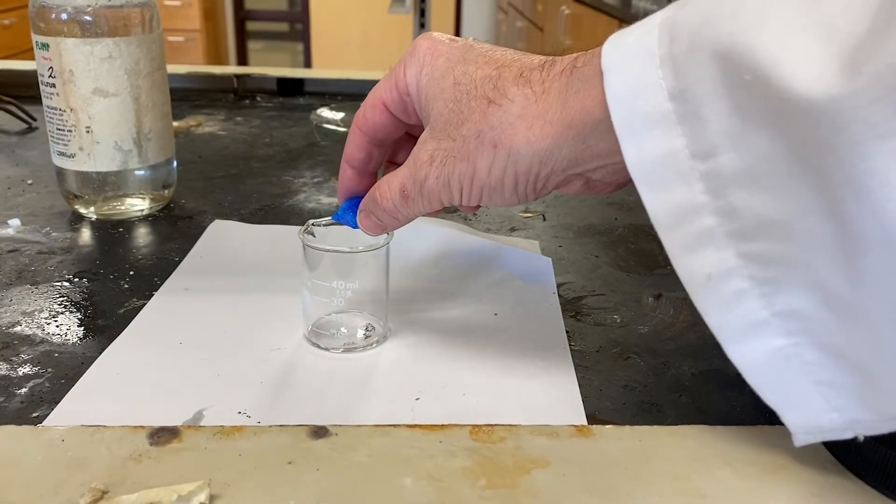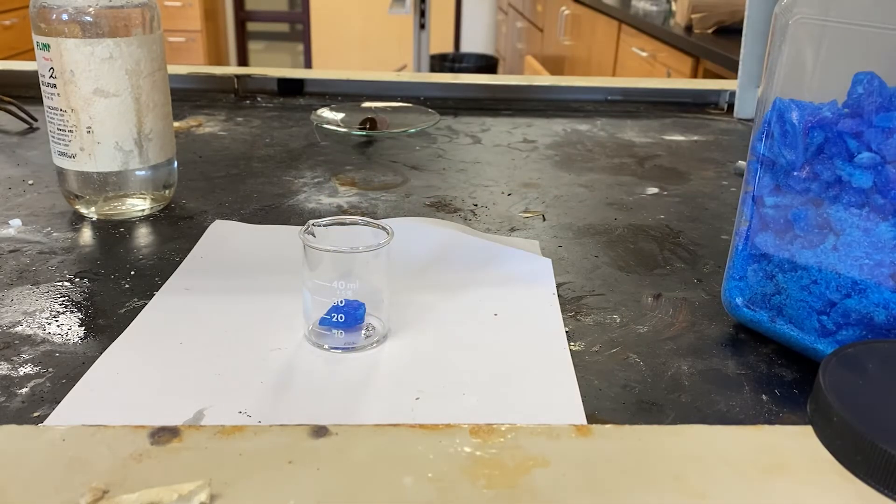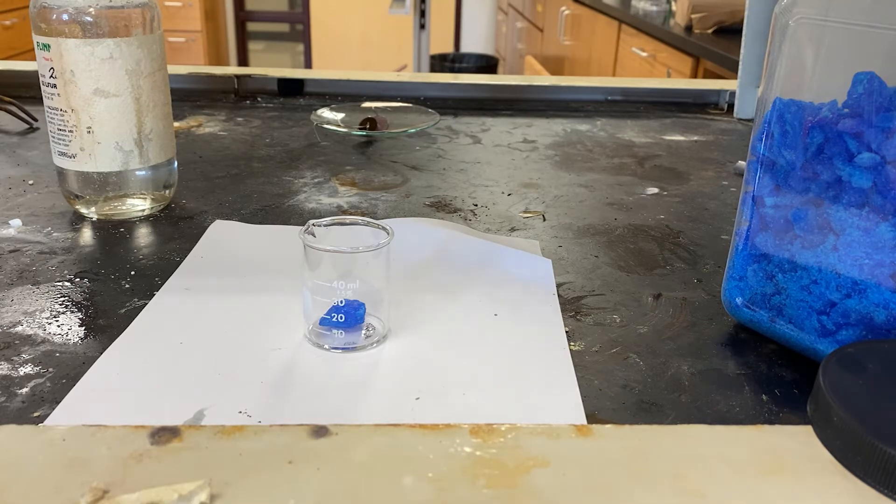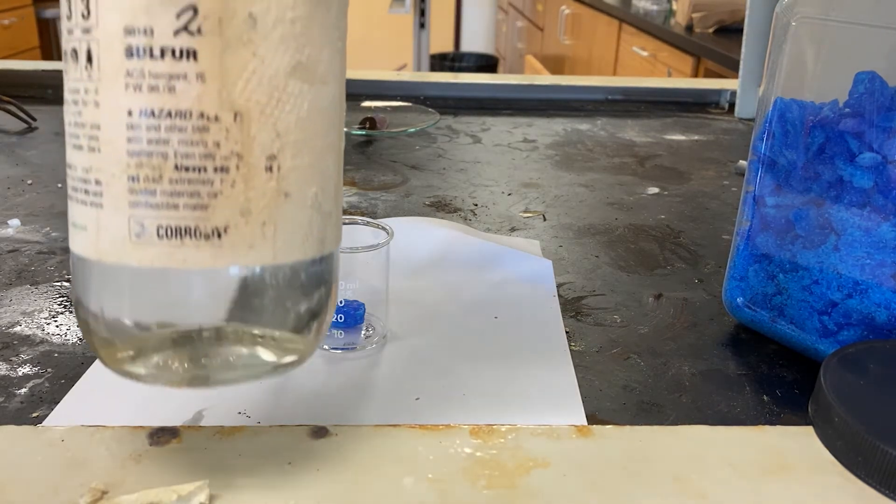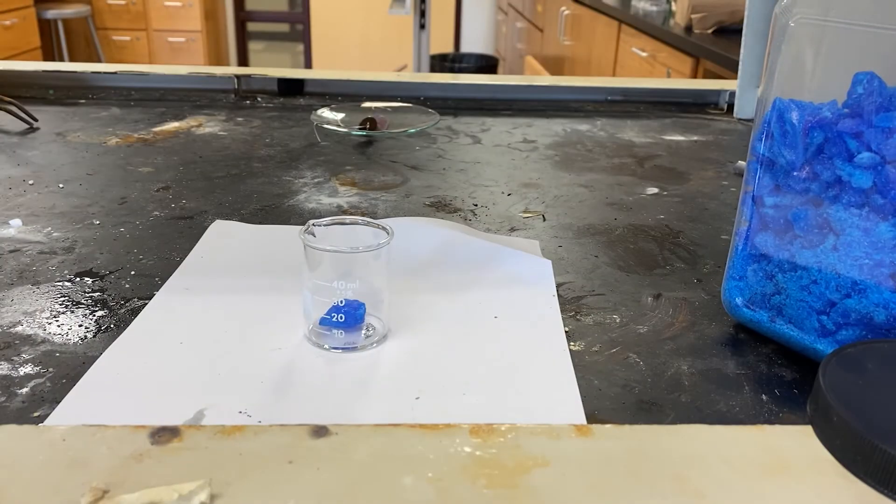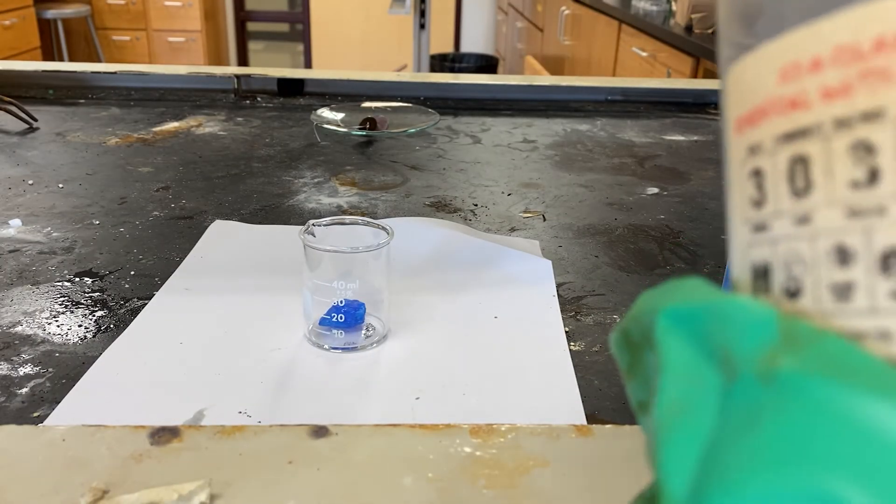So here I'm going to take the copper sulfate and put it into this little beaker. Now this little beaker has a chemical in it, but to really see it, I'm going to need to add that chemical. And this chemical right here is sulfuric acid, super concentrated, 100% sulfuric acid.